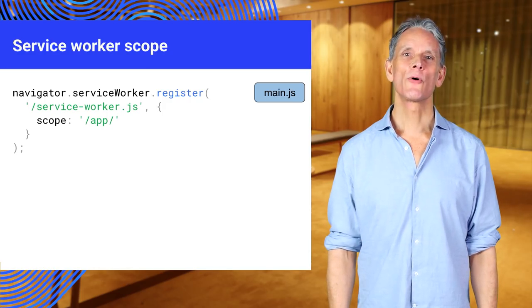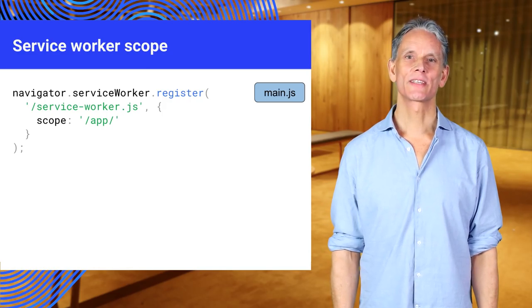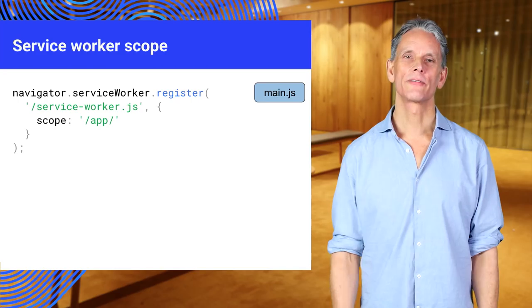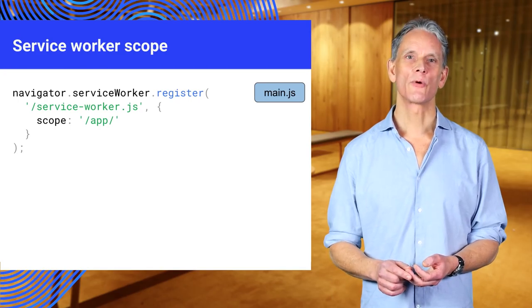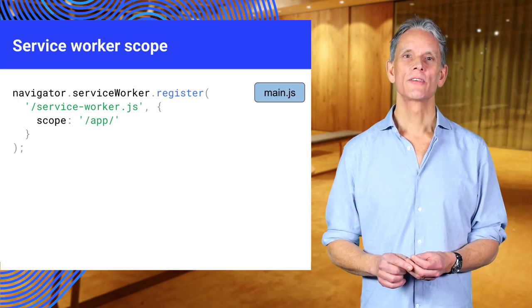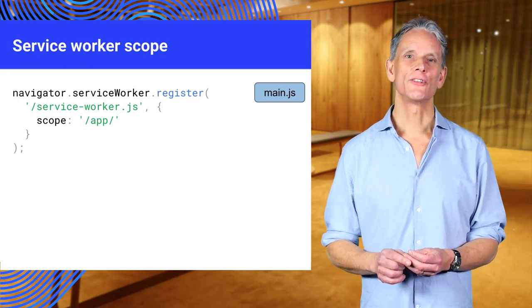A service worker cannot have a scope above its own path. This is defined in your service worker file, serviceworker.js.